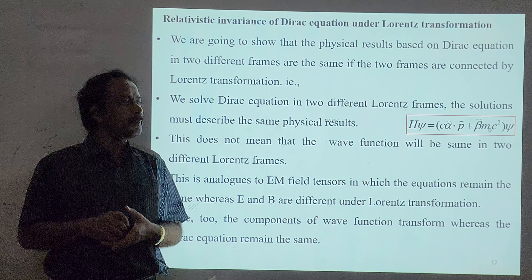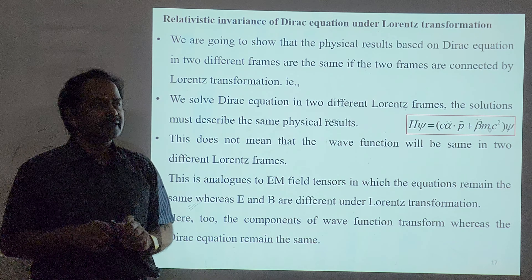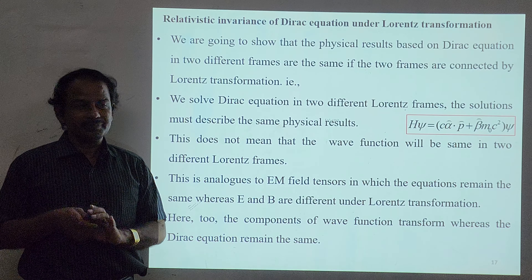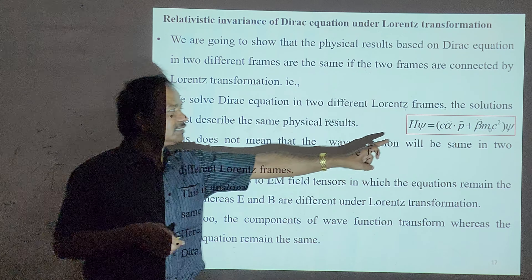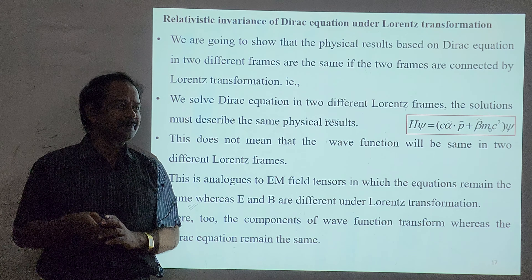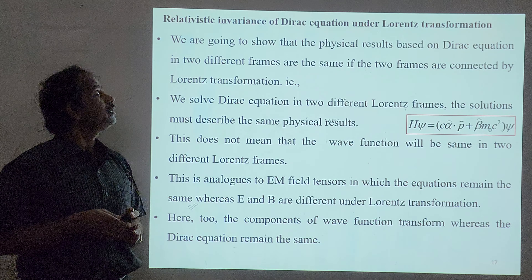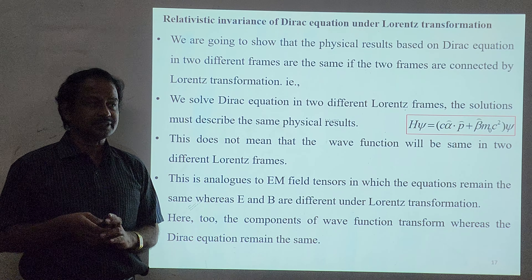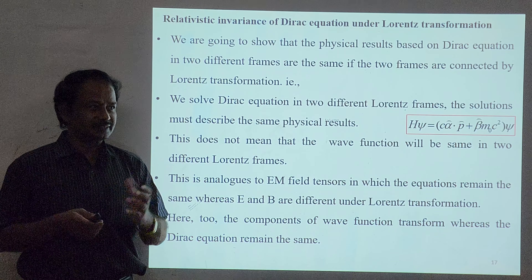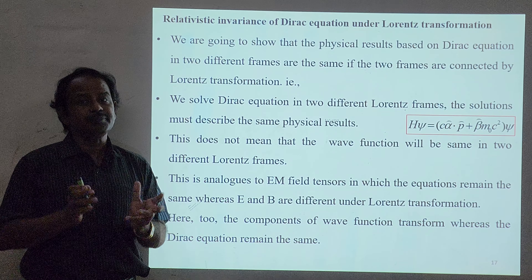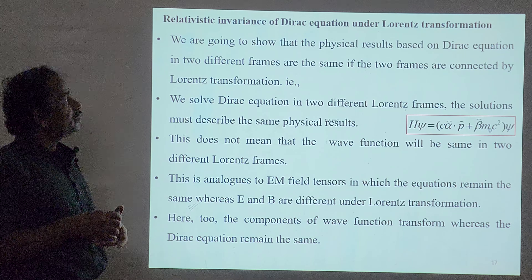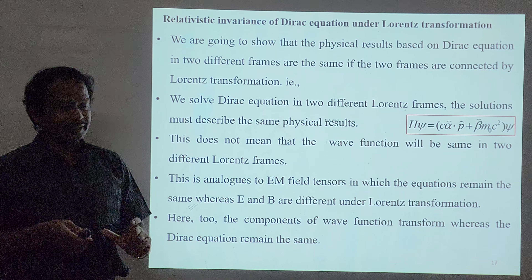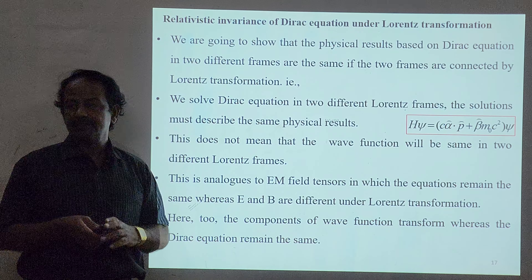Similarly, when we change the Dirac Hamiltonian to another coordinate system, alpha and beta — the gamma matrices — will remain the same, whereas psi will change. That's the idea. In this class we are going to learn the relativistic invariance of the Dirac equation under Lorentz Transformation. 'Invariant' means it will not change — we will have the same results. We are going to show that physical results based on the Dirac equation in two different frames are the same, if the two frames are connected by Lorentz Transformation.